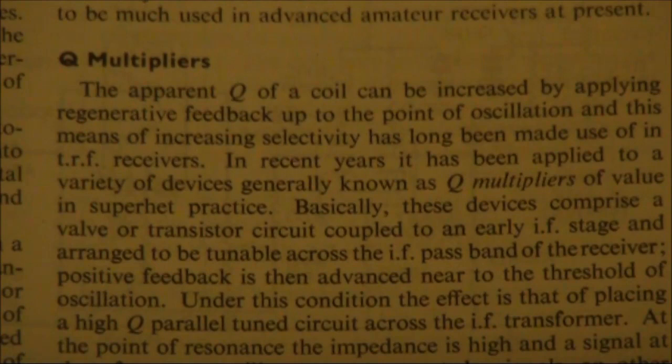And before crystal filters came in to provide improved selectivity. With a Q-multiplier you could provide some positive feedback and that would tighten the Q of the tuned circuit, making it more selective. It's a similar effect to using a regenerative receiver, where as you advance the regeneration control the selectivity tightens.